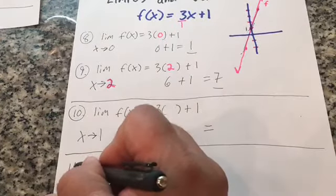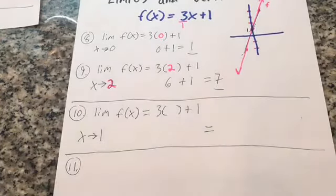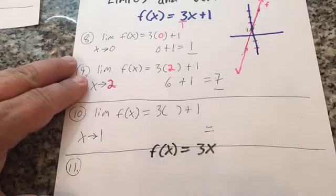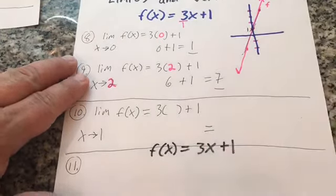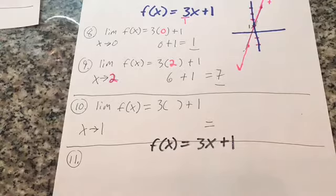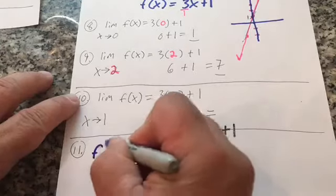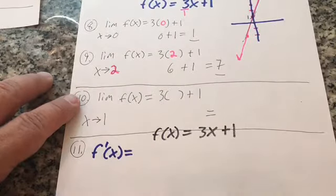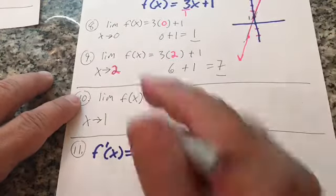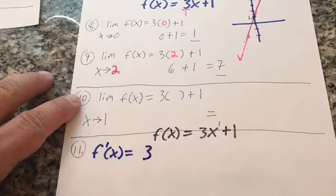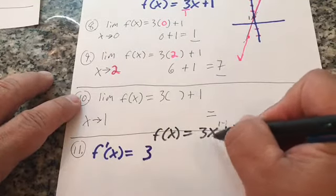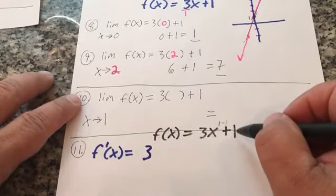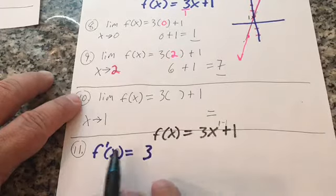Now we're going to do some derivatives. Number eleven: f of x equals 3x plus one. What's f prime of x? There's a hidden exponent of one on x — one times three gives three, then one minus one is zero, so x to the zero equals one. The derivative is 3. So the slope of this line is three.